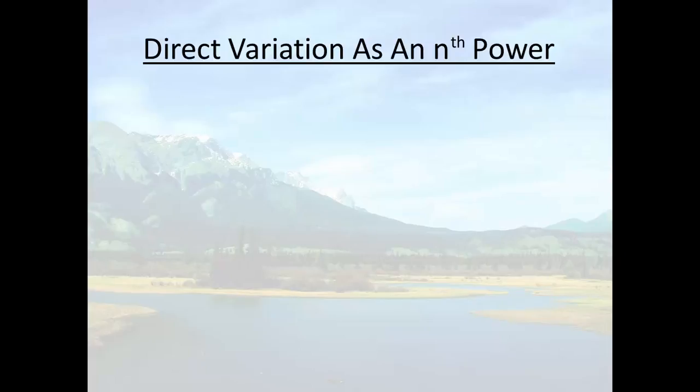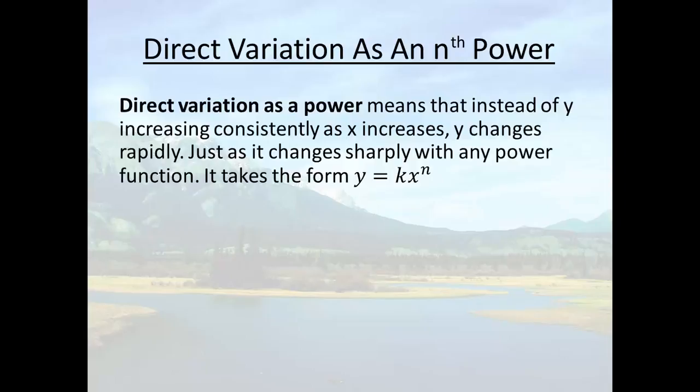Okay, the second type is direct variation as an nth power. And that just means instead of y increasing consistently as x increases, y changes rapidly, just like it would for an x squared graph, an x cubed graph, or any power function. And the formula, the model for it, is y equals kx to the n.